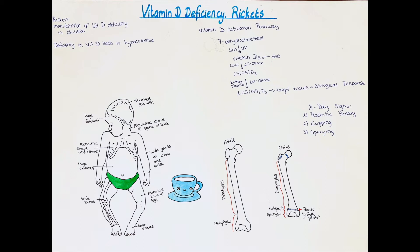For vitamin D to activate we need the liver and kidneys to function properly. Vitamin D3 is converted in the liver first to 25-hydroxy vitamin D3, then in the kidney to 1,25-hydroxy vitamin D3. This is important since problems in either the liver or kidney can also cause vitamin D deficiency and subsequently osteomalacia or rickets.